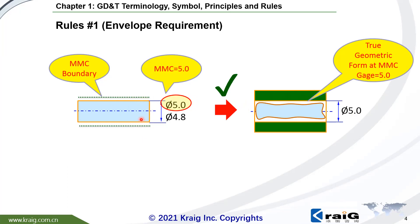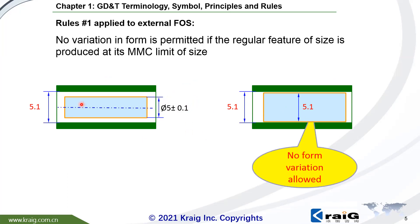Meanwhile, all of the local size or diameter should be within tolerance. If all of the local size is at MMC size 5.1, any local size is 5.1. That means this feature of size is at MMC status now. Then you are not allowed to have any deformation, otherwise you will be over the MMC boundary. That's why we say if this part is at MMC, then the form should be perfect.